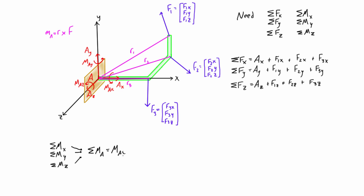The sum of moments about A includes MAx plus MAy plus MAz from the connection. The great thing about solving moments about the point where your reaction or connection is located is that we don't have to include Ax, Ay, and Az in the equation — the lines of action of those forces pass right through that point and don't cause a moment there. Then we add the moments from the applied forces: r1 cross F1, plus r2 cross F2, plus r3 cross F3.